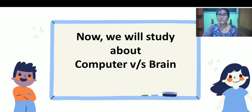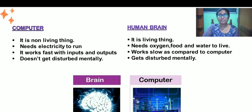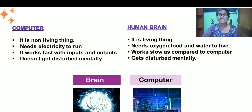Now let us study about the difference between the human brain and computer. We all know a computer is a non-living thing while the human brain is a living thing. A computer needs electric supply to run, while the human brain needs oxygen, food, and water — in general, what a human needs.